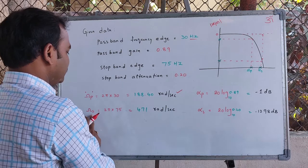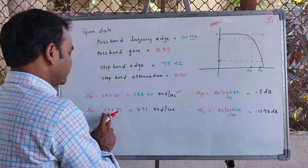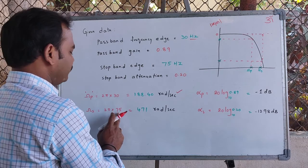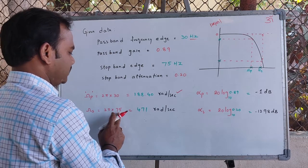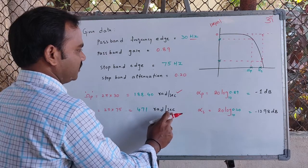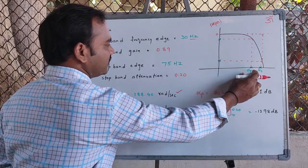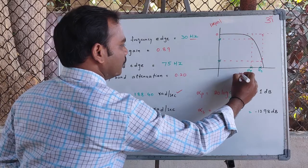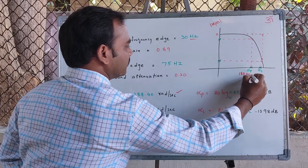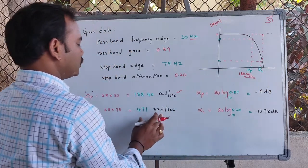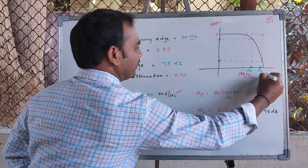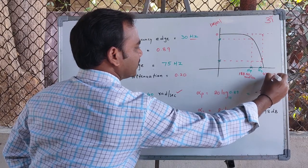Next, the stopband frequency in radians per second is 2π times the given stopband edge frequency of 75 Hz, which gives 471 radians per second. So the passband frequency is 188.40 rad/s and the stopband frequency is 471 rad/s.